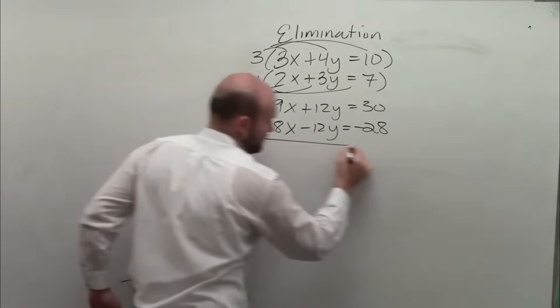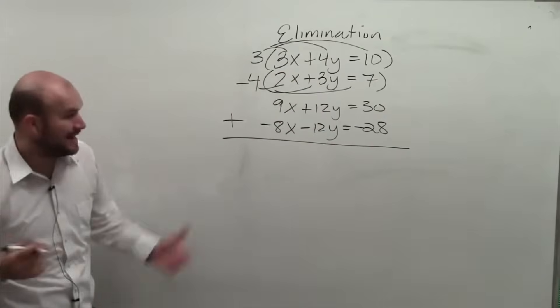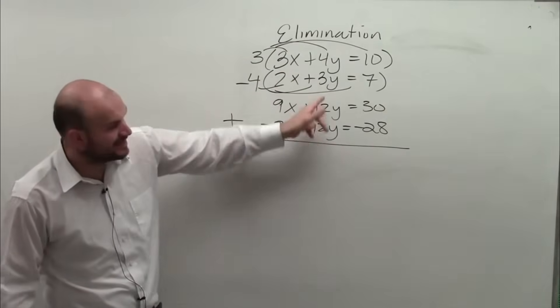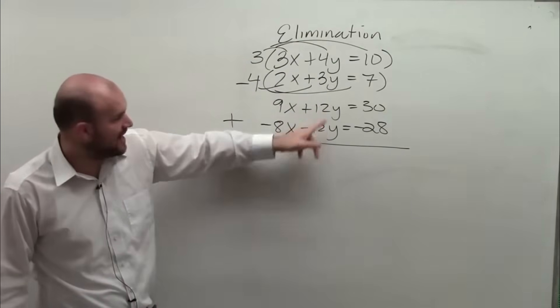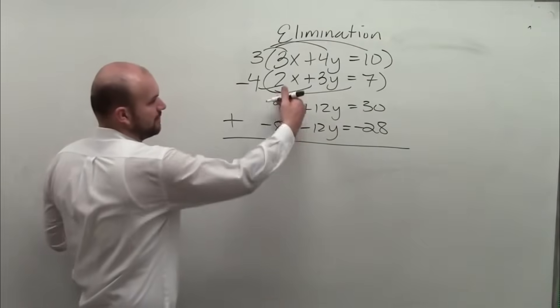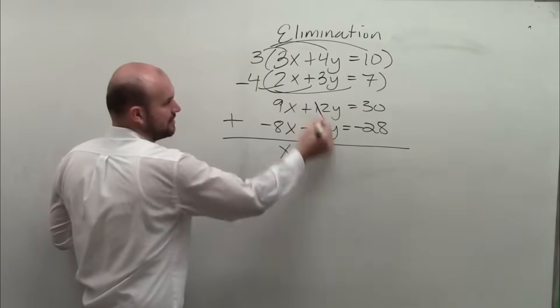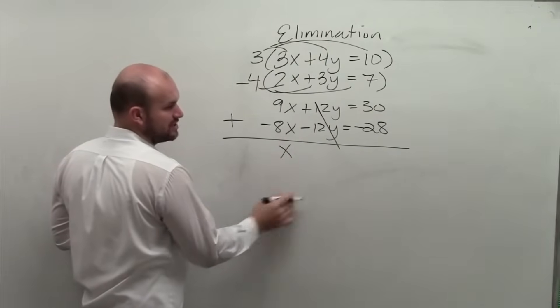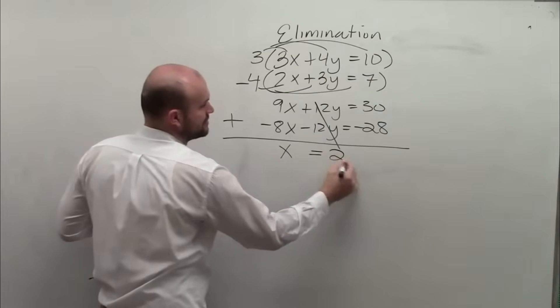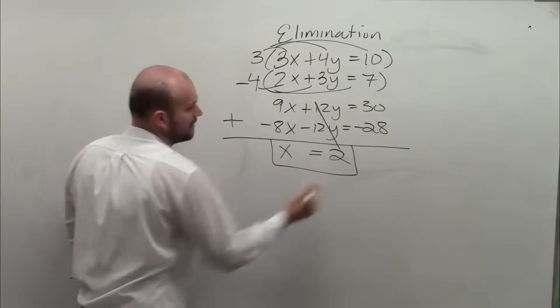Now I add them. And I can add them because you can see, these are exactly the same. One's positive, one's negative. So therefore, 9 plus 8x is just going to be x. That goes to 0y, which is just 0, is equal to 2. So now, I got my answer. Now we know what x is.